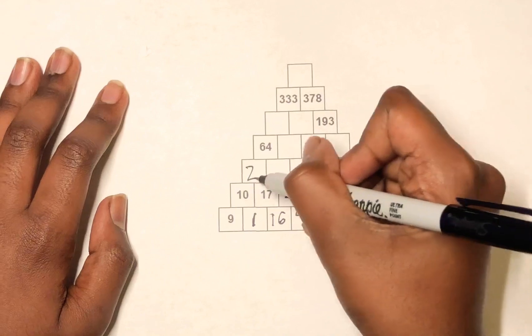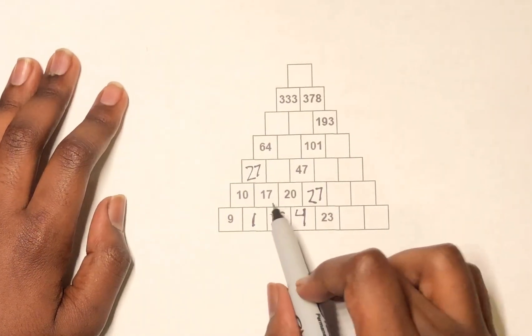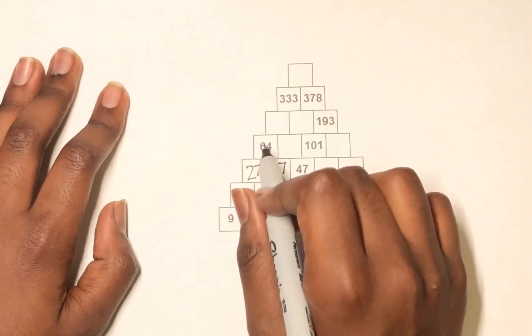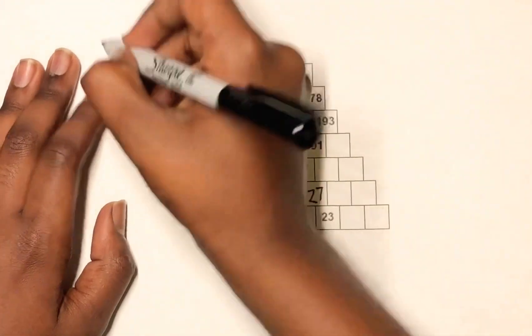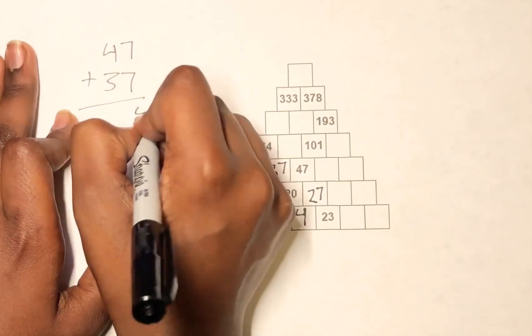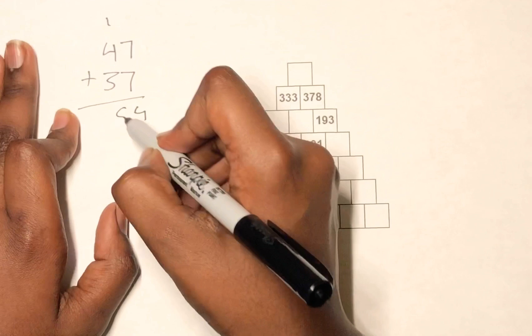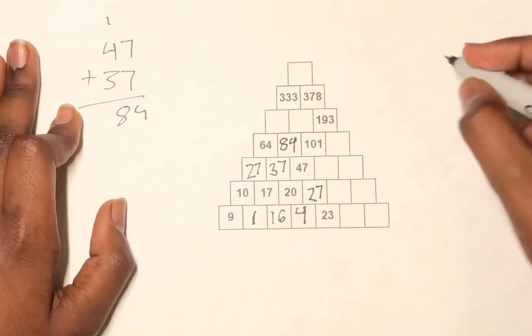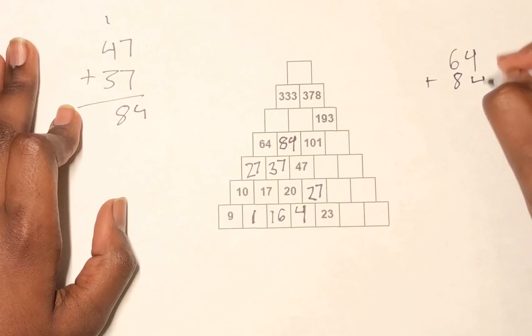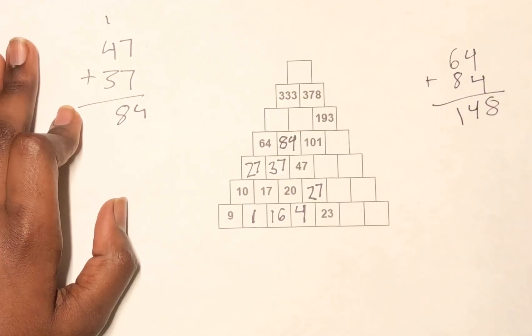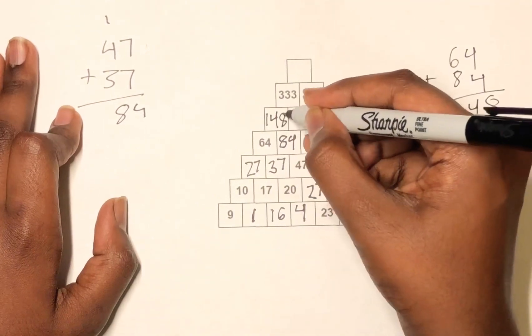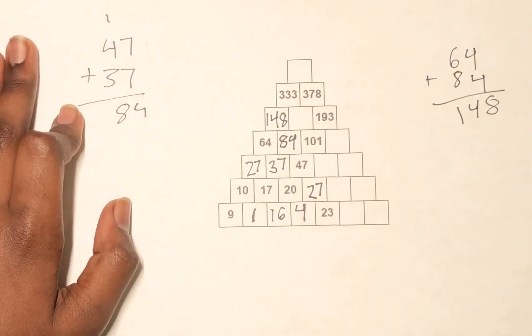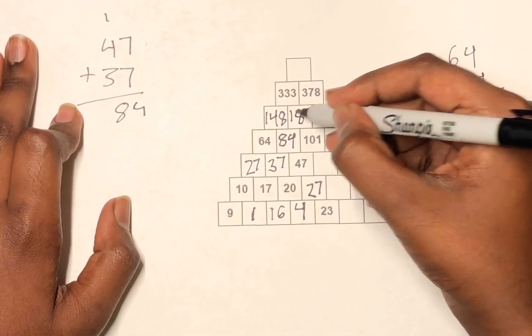So 17 plus 10 is 27. Then 20 plus 17 is 37. And 37 plus 27 is 64. So then we do 47 plus 37, and that equals 84. So we put 84 over here. So then 64 plus 84 equals 148. And then 84 equals 185.